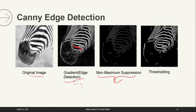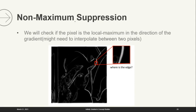Now let's have a detailed explanation of non-maximum suppression. Please pay attention — it is a very important thing. We will check if the pixel is a local maximum in the direction of the gradient. We suppress the pixel which is not a maximum. Why is it needed? Because as you can see, the edge is thick — there are so many white pixels here and we want just a thin single-pixel line.